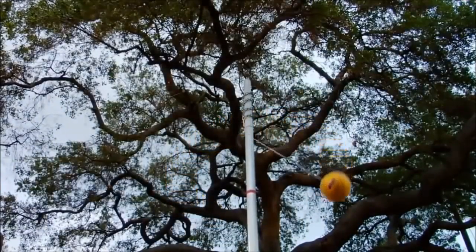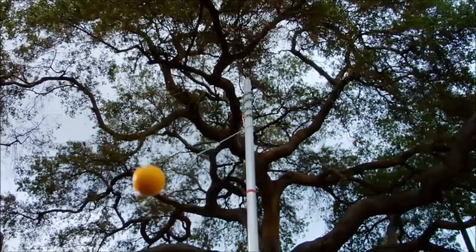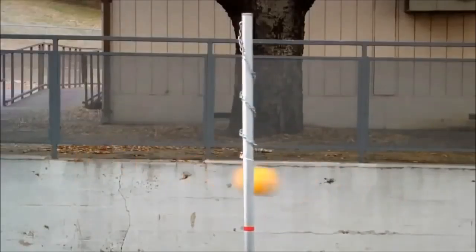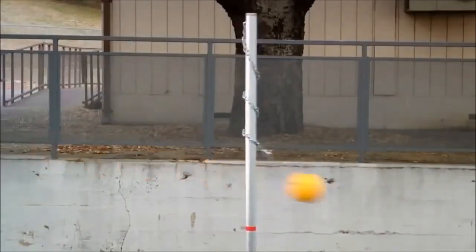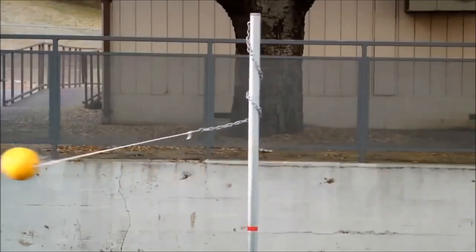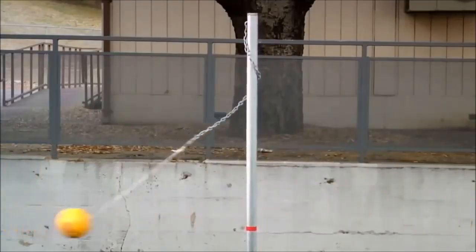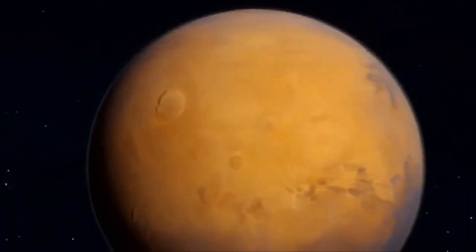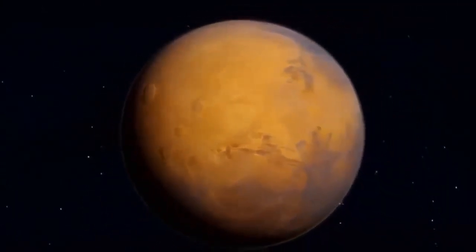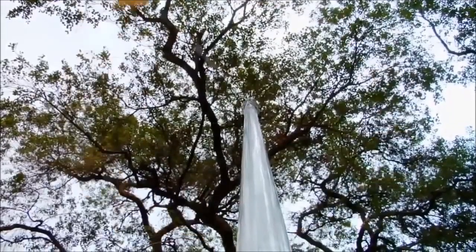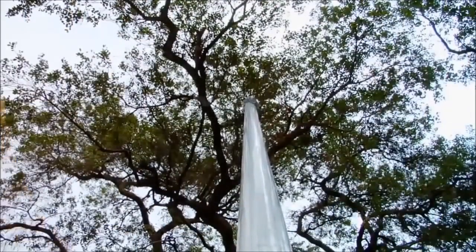On the other hand, Deimos, the further out moon, is going slower than Mars rotates. And so it's unwinding the string in the opposite way. And what we see is Deimos is going further and further away from Mars. And eventually, Deimos will be pulled away from Mars by the gravity of the Sun. So over time, Mars will become moonless.